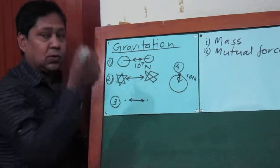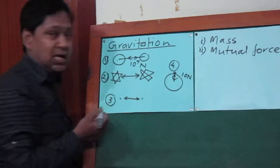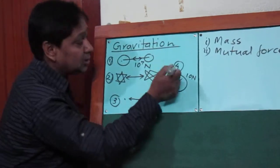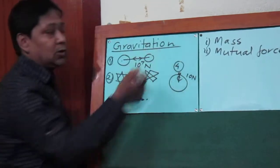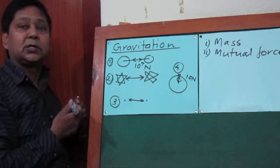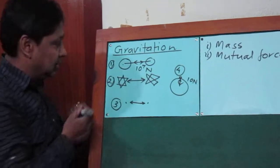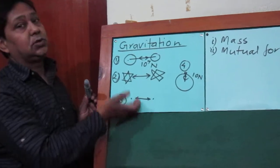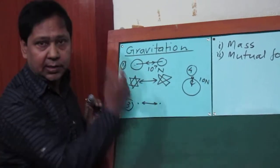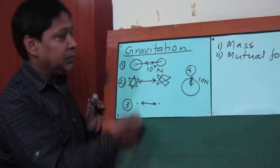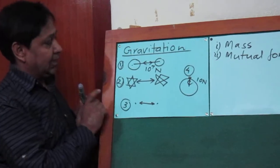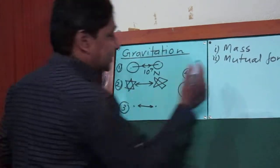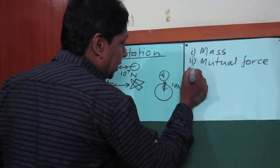If this body is attracted towards the center of the earth with a force of 10 Newton, then not only the earth — this body also attracts the earth towards its center with the same force of 10 Newton. The same is true for stars and dust particles. So this mutual force has equal magnitude — they have equal forces.